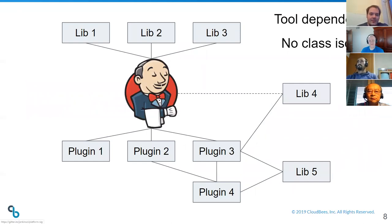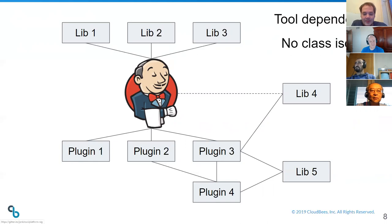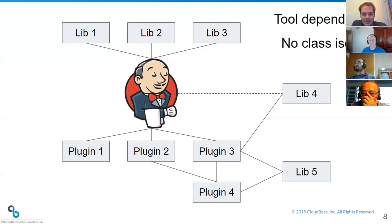In Jenkins, we have many kinds of dependencies. Jenkins core may include a number of libraries exposed to consumers as API. Plugins depend on Jenkins core, plugins may depend on each other, and plugins may depend on libraries. In some cases, multiple plugins depend on a single library — for example, Jackson or Snakeyaml. We also have cases where plugins and Jenkins core depend on a single library and sometimes plugins require a higher version than Jenkins core.